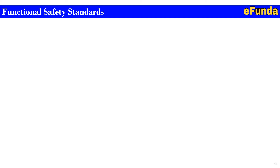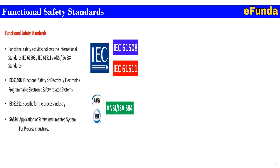The SIS will have a SIF which might include a pressure transmitter to sense when an intolerable pressure level is reached, a logic solver to control the system logic, and a solenoid valve to vent the contents of the vessel to a safe location such as a flare stack or storage tank, thus bringing the pressure vessel to a safe state. For this, one can refer to the picture below where IEC 61508, IEC 61511, and ISA S84 are shown as the relevant functional safety standards.